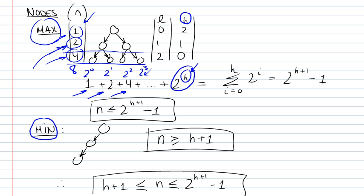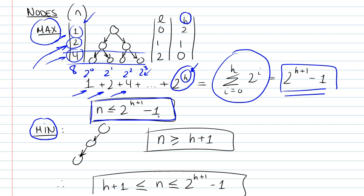This is of course a geometric series which could be translated as such. And the result would be the following. So this is the maximum number of nodes you could have. So n is always less than or equal to 2 to the h plus 1 minus 1.